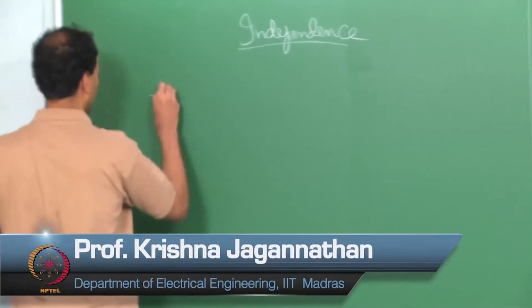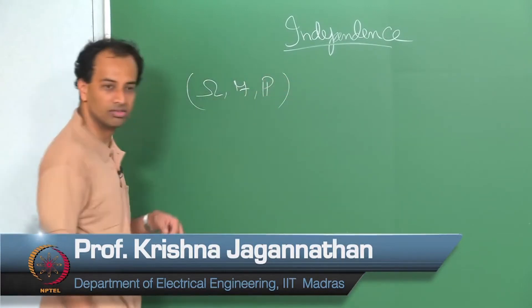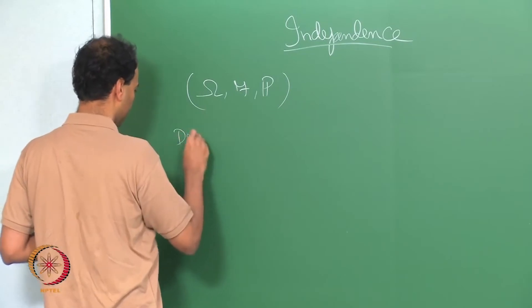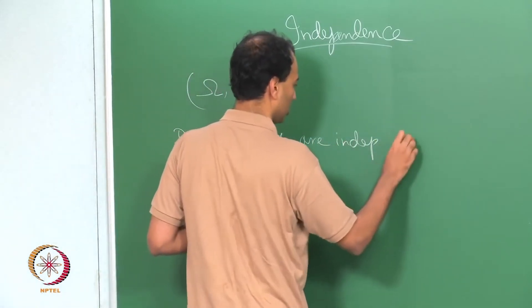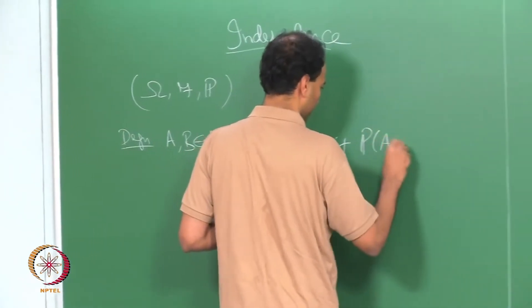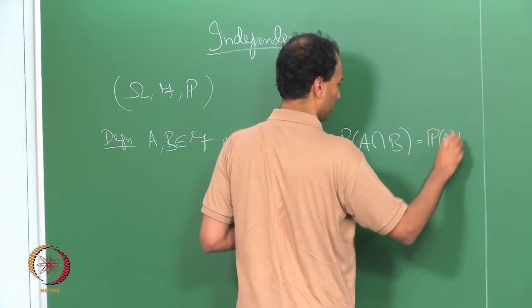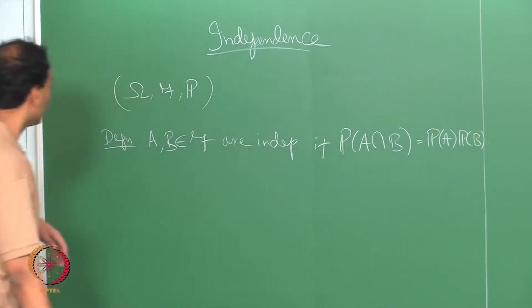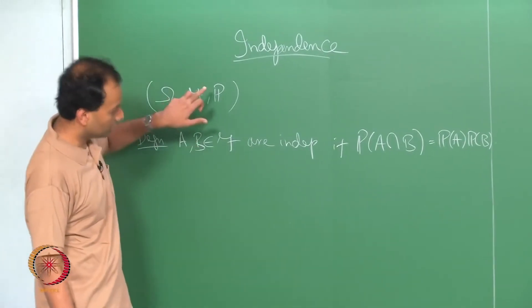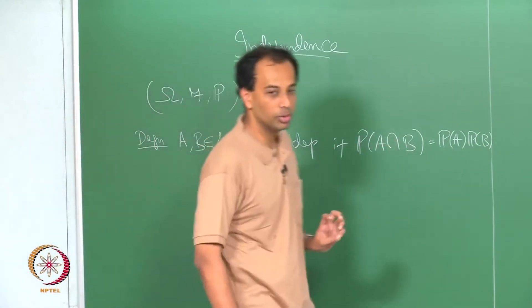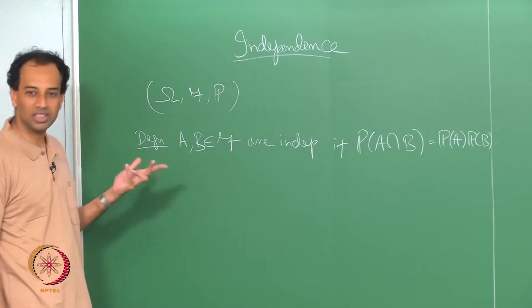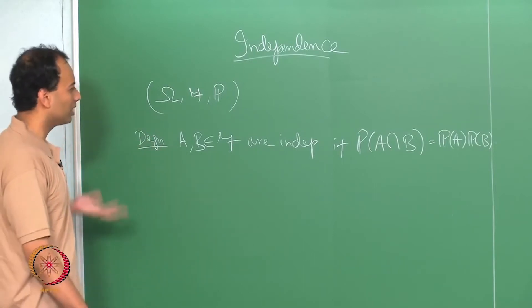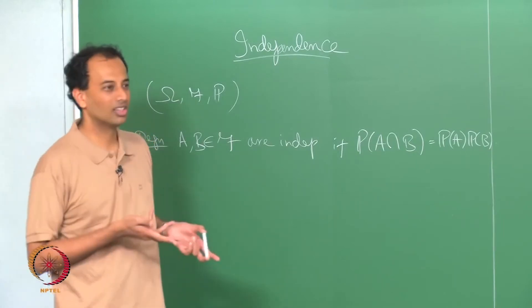We were discussing independence of events. We fixed a probability space and said that A and B are independent. Two events A and B are independent under this probability measure if the probability of A intersection B equals the probability of A times the probability of B. Under some other measure they may not be independent. Whether two events are independent depends on what probability measure you are talking about, but we would not keep specifying the measure when it is understood.